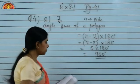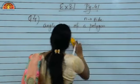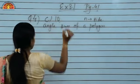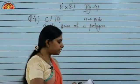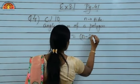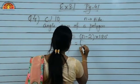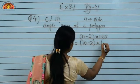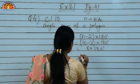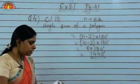Let us do part C of the same question. Number of sides given is 10. Using the formula (n − 2) × 180 degrees, with n = 10: (10 − 2) × 180 = 8 × 180 = 1440 degrees.